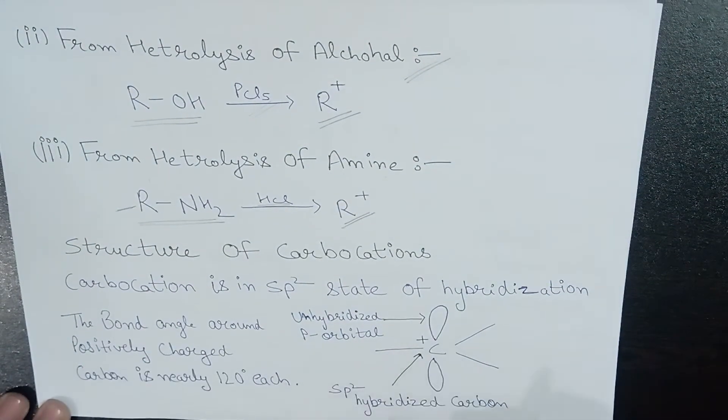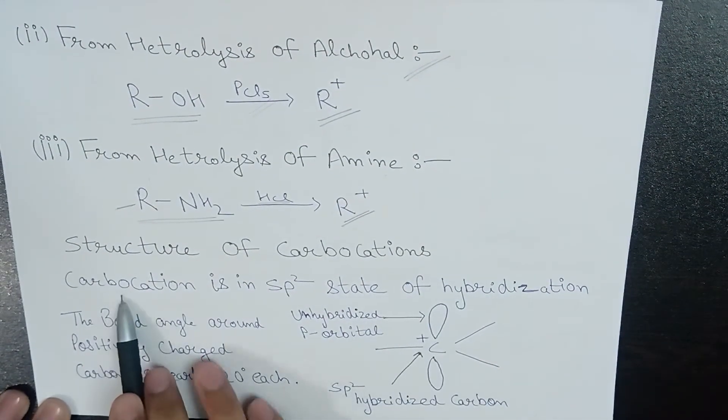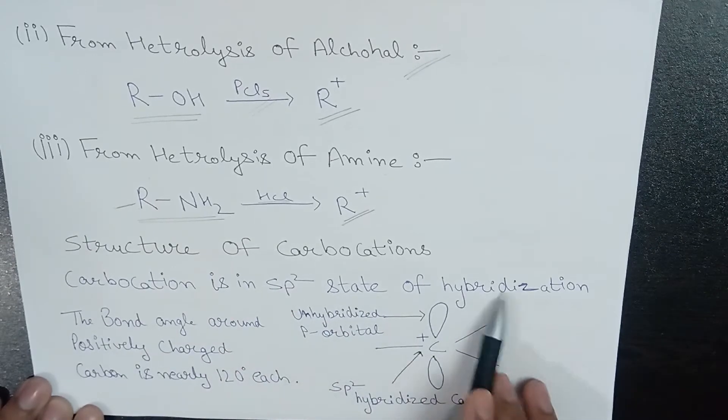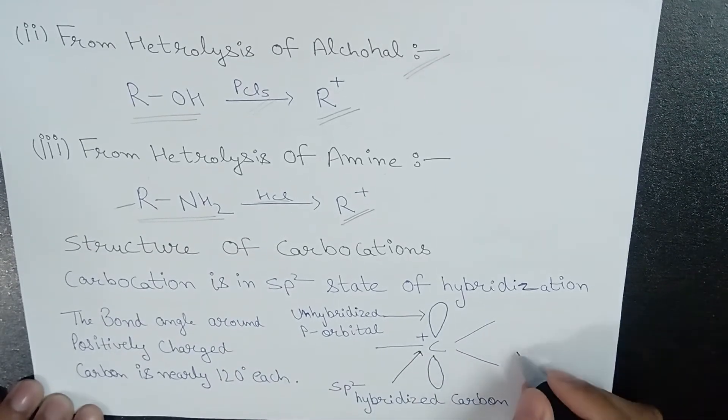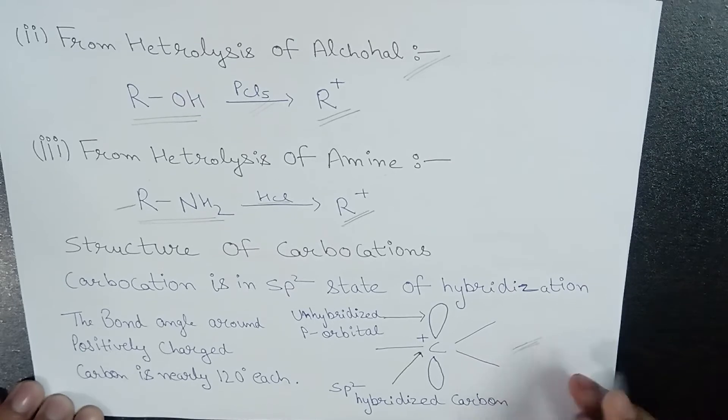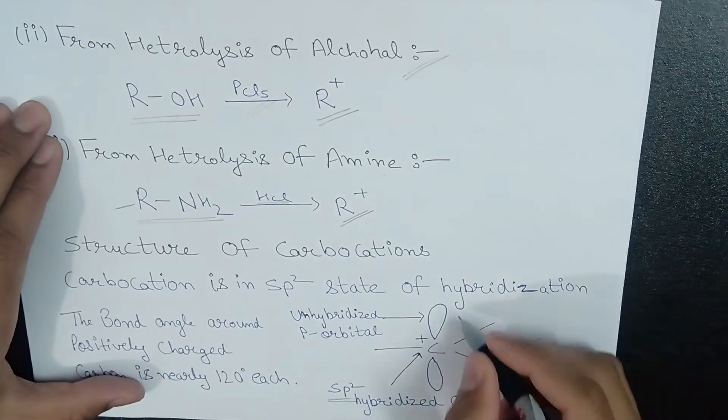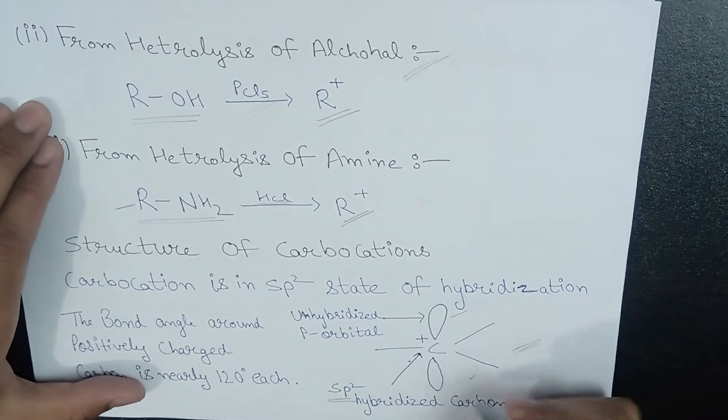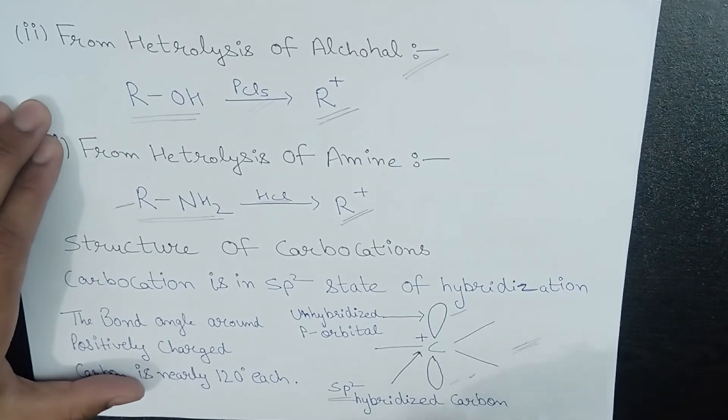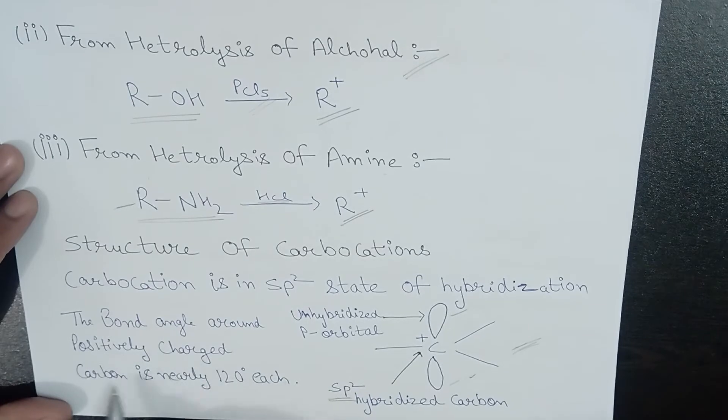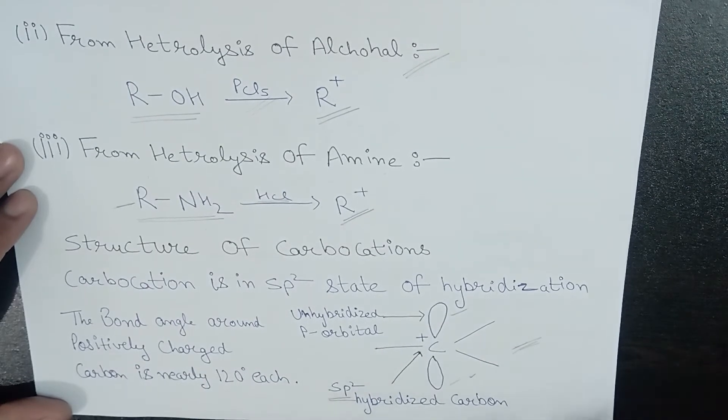Now we'll head to the structure of carbocations. Carbocation is in sp2 state of hybridization. By this diagrammatical representation, you can clearly see that the carbon is sp2 hybridized and these two are the unhybridized p orbitals. The bond angle around positively charged carbon is nearly 120 degrees.